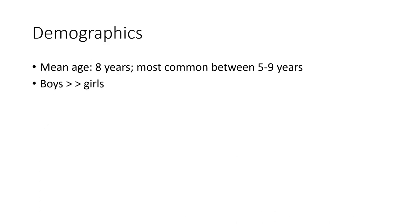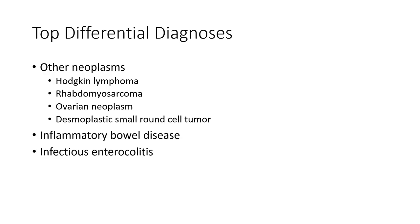Demographics: most common between ages five to nine years, more pronounced in boys than girls. The differential diagnosis includes other neoplasms such as lymphoma, follicular lymphoma, rhabdomyosarcoma, ovarian neoplasm, desmoid, and small round cell tumors. Also consider inflammatory processes, infection, and other etiologies.